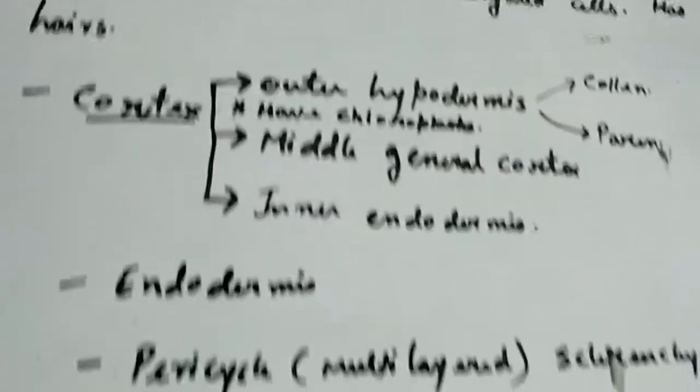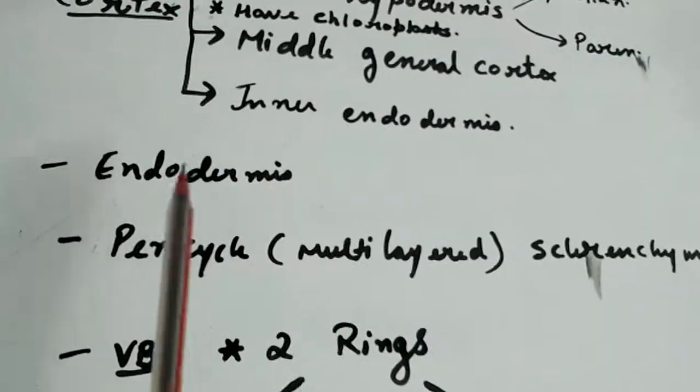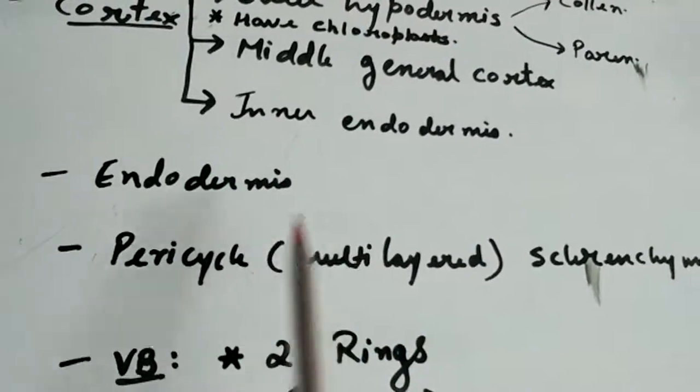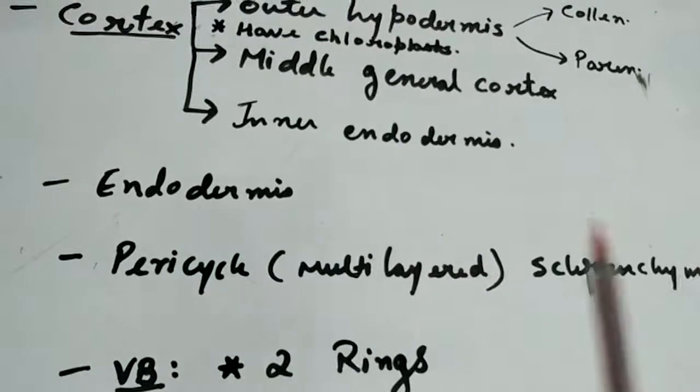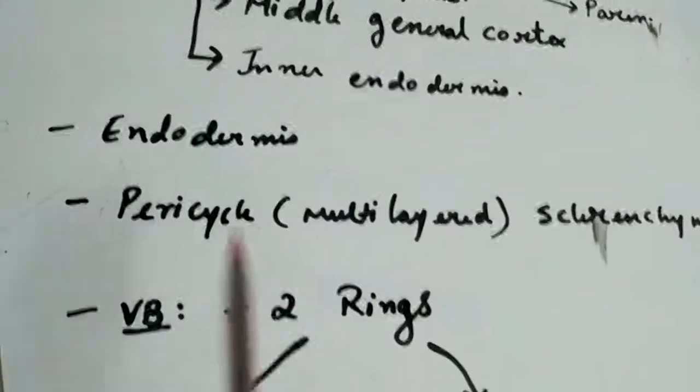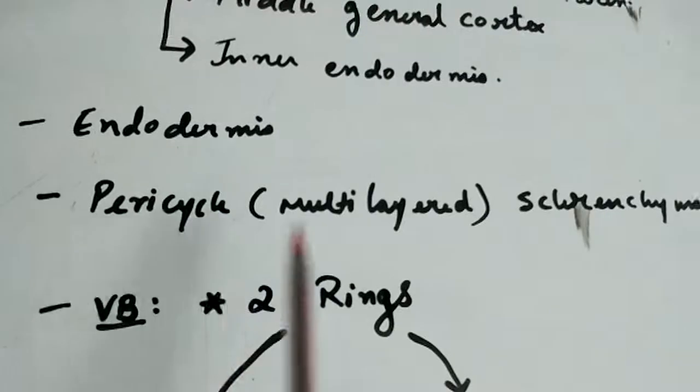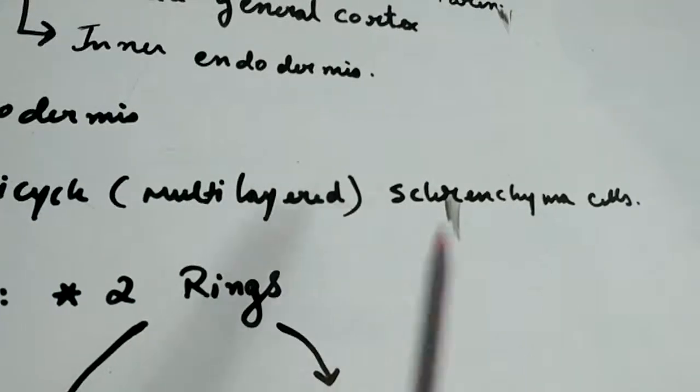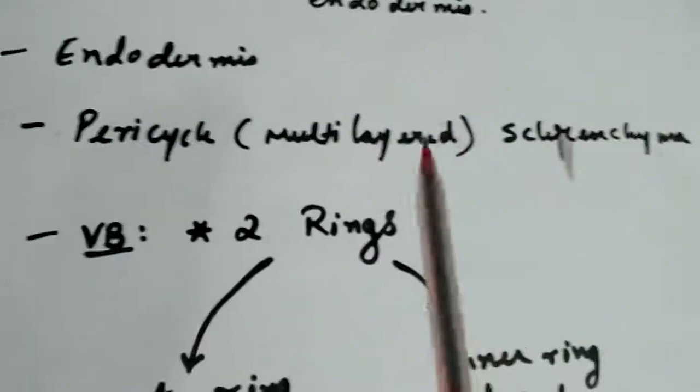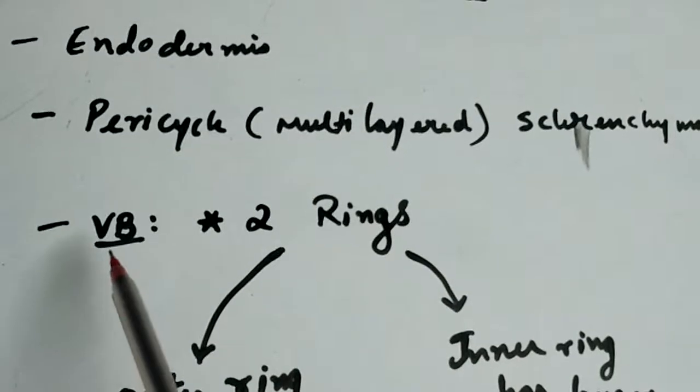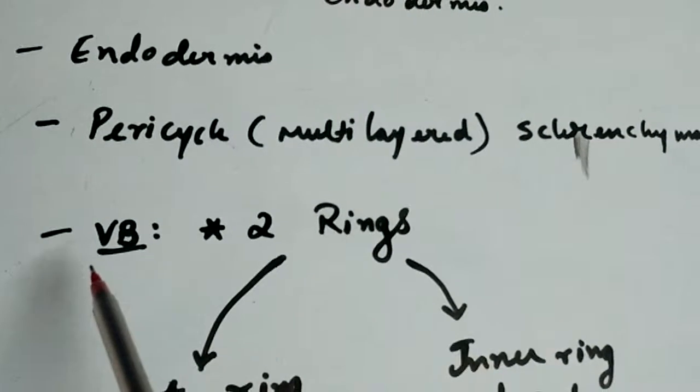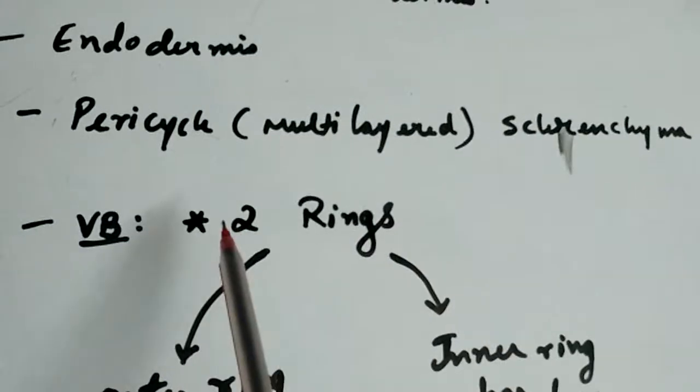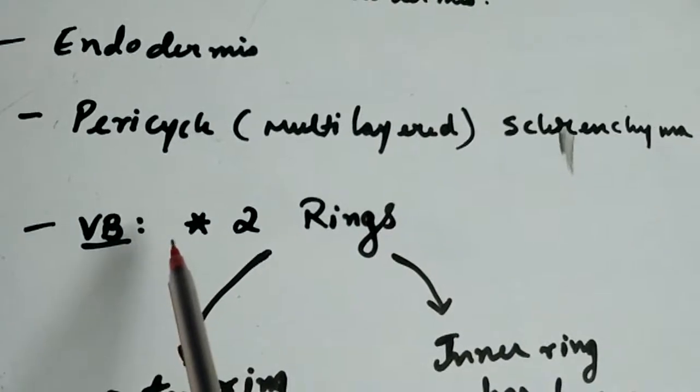Endodermis has starch grains. It's single-layered. Pericycle is multi-layered and sclerenchymatous cells are present. Vascular bundle - this is the most important point to be noted down.